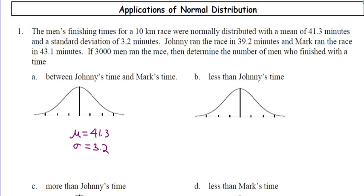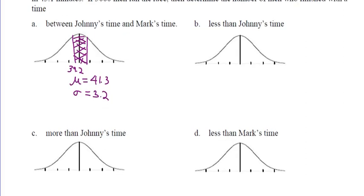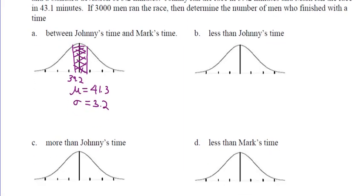Johnny's time was 39.2 — it's going to be below the mean. I don't care exactly where it is, it's just below the mean, 39.2. Mark ran the race at 43.1; it's above the mean. I'm just using this to shade this in. Now I want to know what percent of people finished between them.